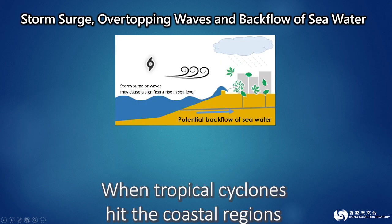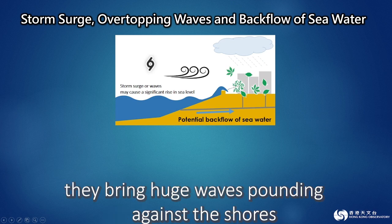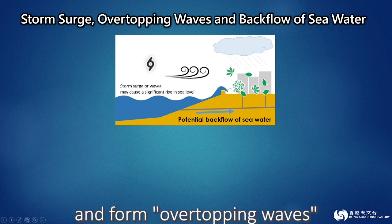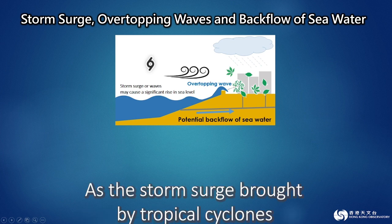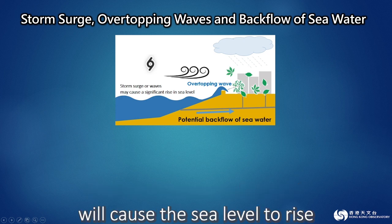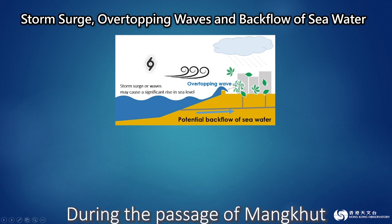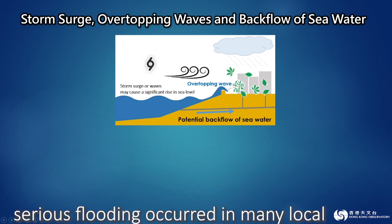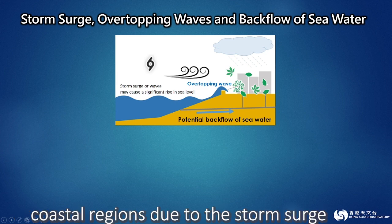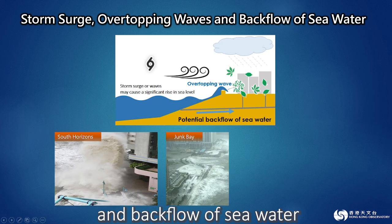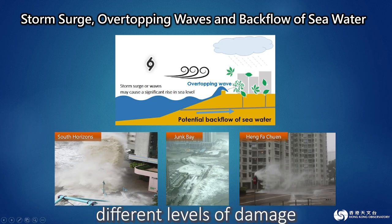When tropical cyclones hit coastal regions, they bring huge waves pounding against the shores, which may surpass the seawall and form overtopping waves. As the storm surge brought by tropical cyclones will cause the sea level to rise, the overtopping waves will intrude into coastal regions more easily and cause flooding. During the passage of Mangkhut, serious flooding occurred in many local coastal regions due to the storm surge together with overtopping waves and backflow of seawater. Many coastal areas suffered different levels of damage.